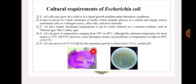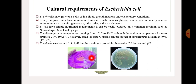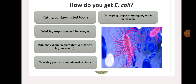The normal pH range for E. coli growth is 4.5 to 9.5, and the optimum pH is 7 — neutral pH. This image shows E. coli growth on nutrient agar, and this image shows E. coli growth on MacConkey agar, where they turn pink in color.